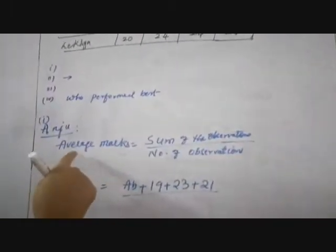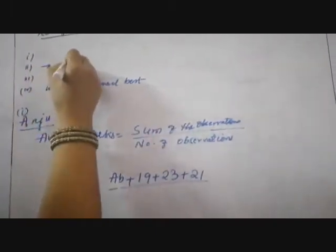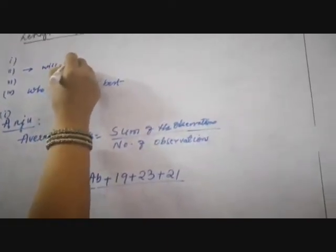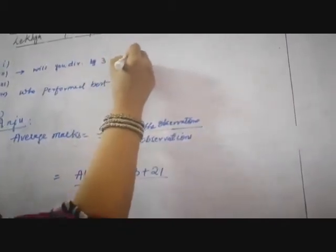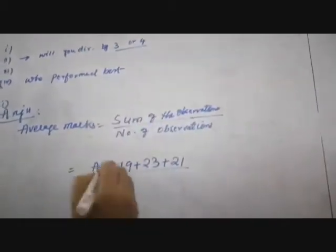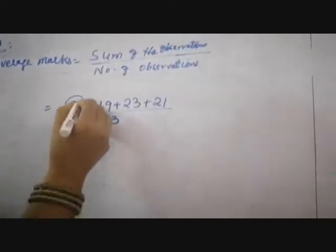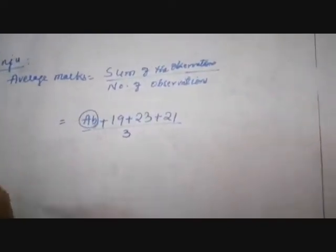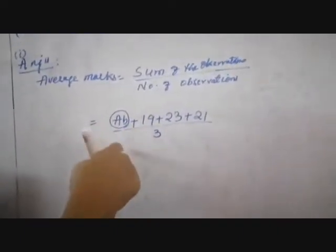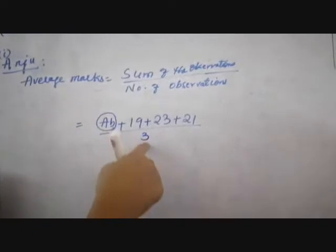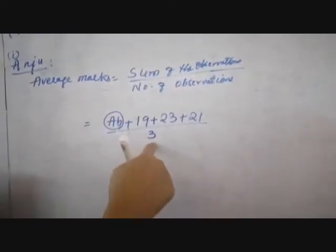Will you divide by 3 or 4? I will divide by 3, because she was absent for one test. When any particular student is absent for a test, they will submit a letter, and that average will be divided by 3, not by 4.